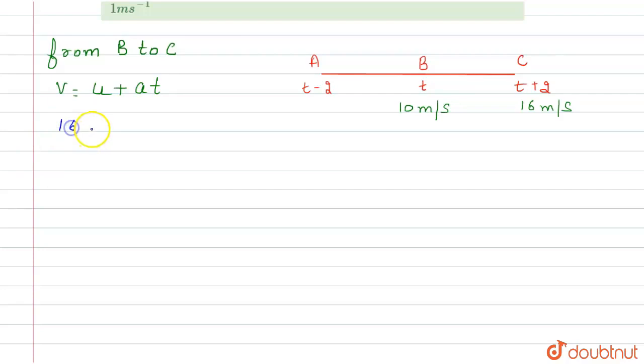From here we can calculate the value of a, which is 2 meters per second squared.